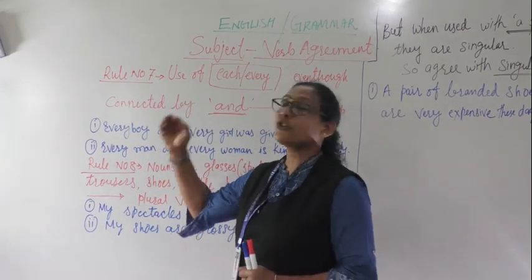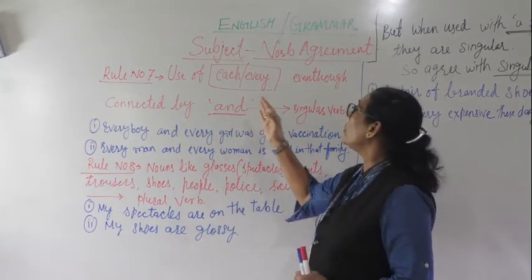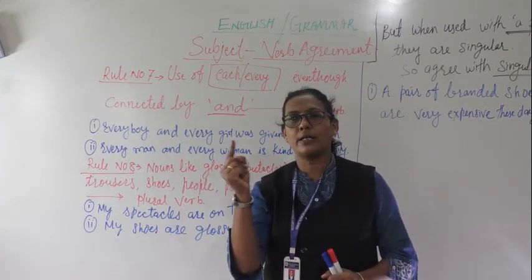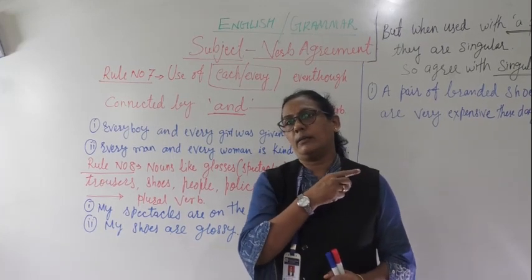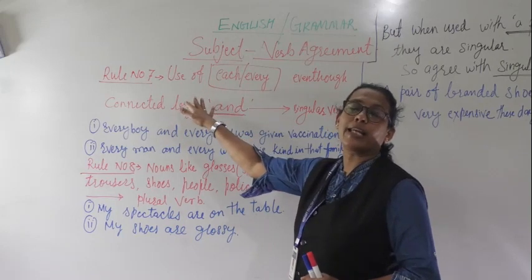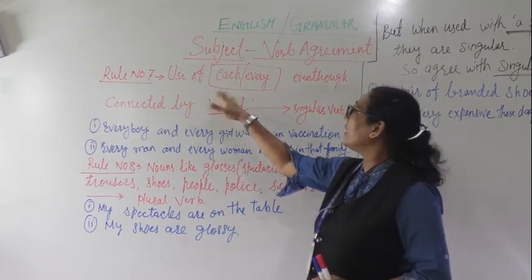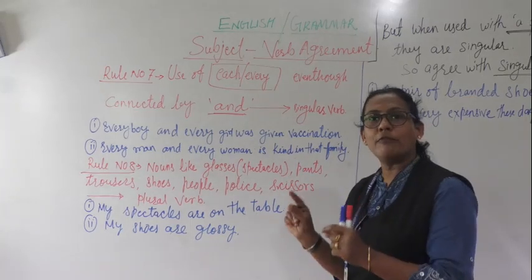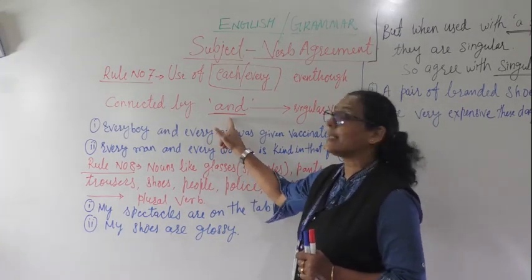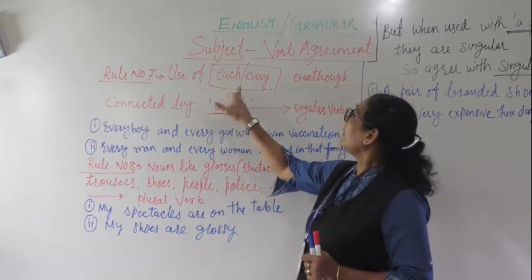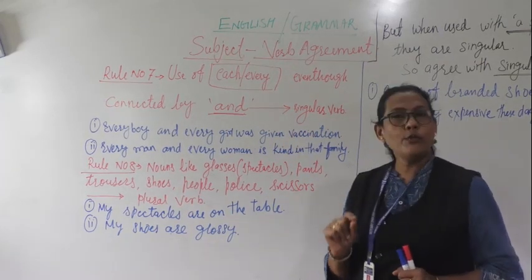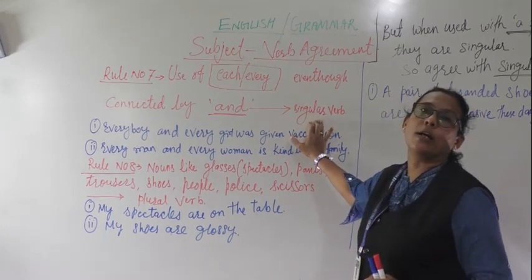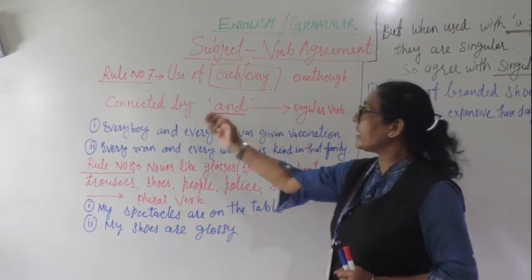We will start with the next rule — rule number seven: the use of 'each' and 'every.' Our topic is subject-verb agreement. The subject in number must agree with the verb. So today we are learning rule number seven: when 'each' and 'every' are used, even though connected by the word 'and,' they take a singular verb.